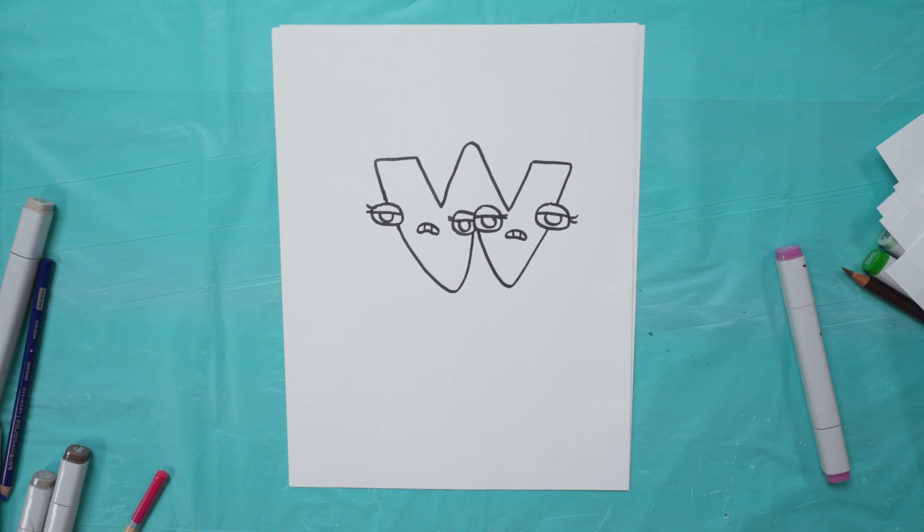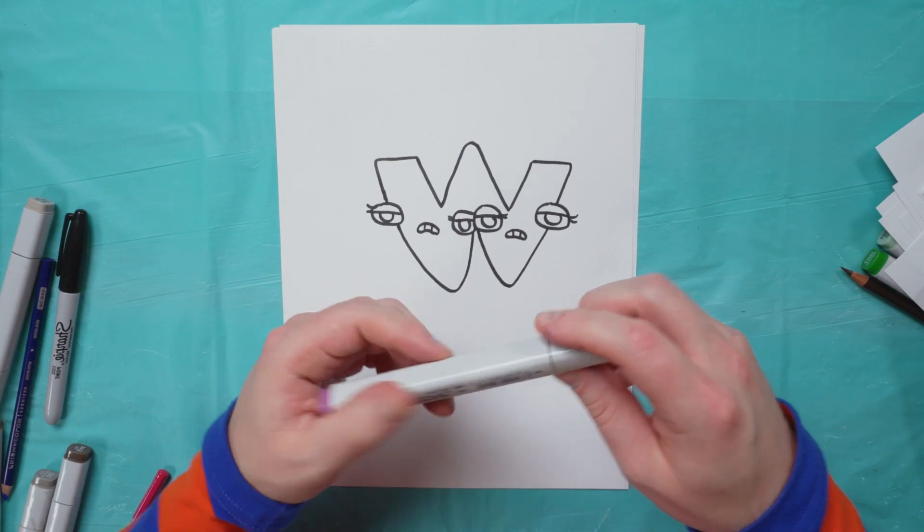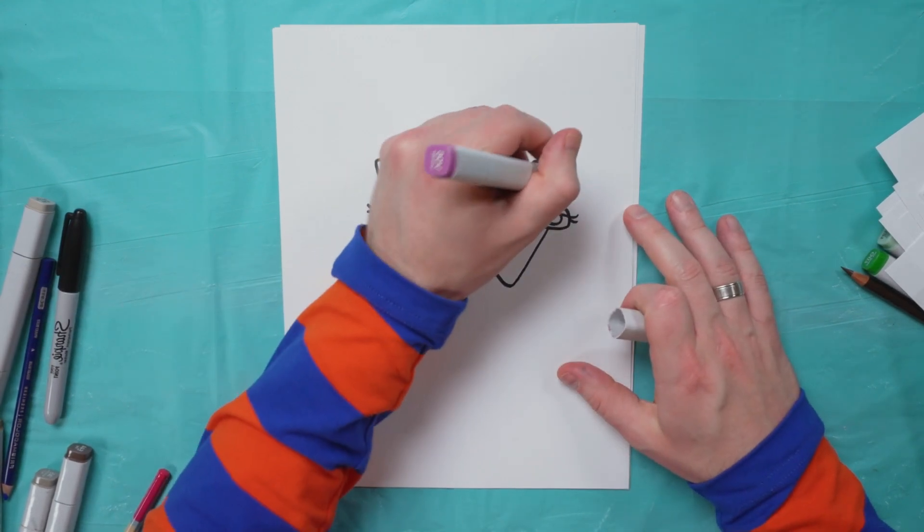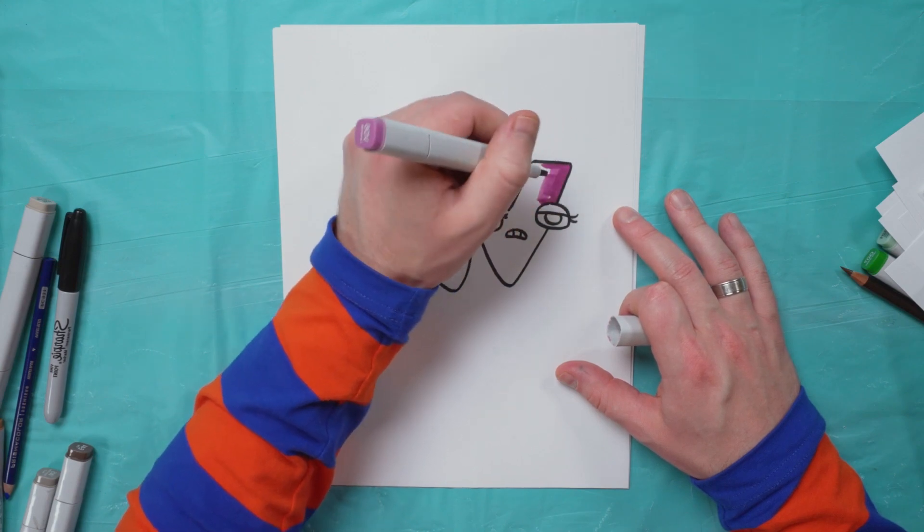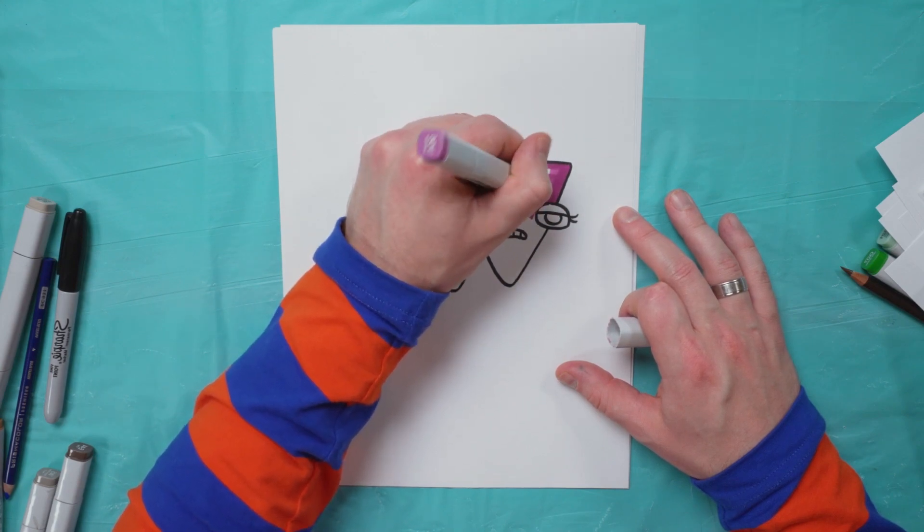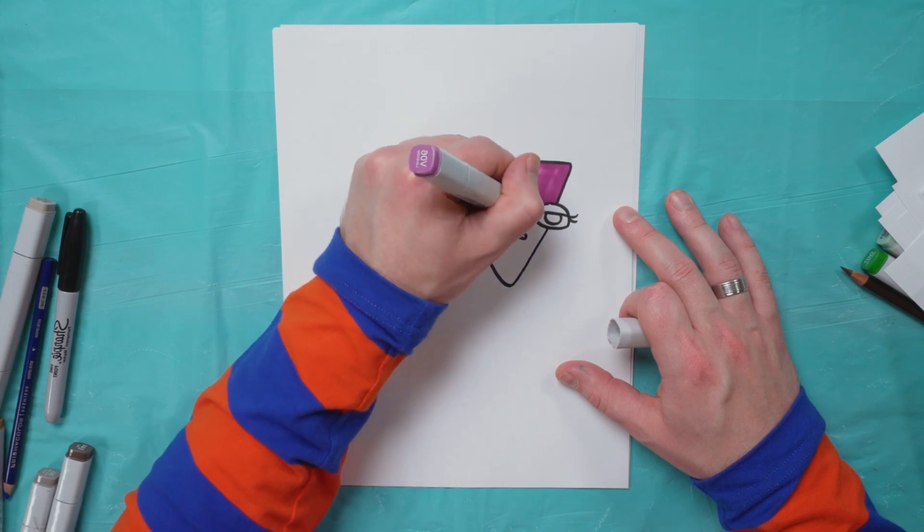Okay, so to finish off our drawing, we're going to color it in. So I have this marker, this purple marker, and I'm going to fill in the whole body. We want to leave the eyelids and the eyes alone though first, and we'll come back to those in a second.